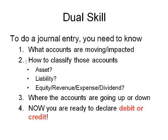When you know which accounts moved, then you classify them. Was that account cash? It's an asset. Did accounts payable go up? That's a liability. Did accounts receivable change? That's an asset. Did expenses change? That falls in that category. As soon as you know what accounts you have, what type of account they are, and whether they're going up or down, now you can decide if it's a debit or credit. Debits or credits are the last thing you decide in a transaction.